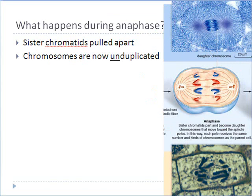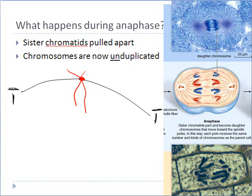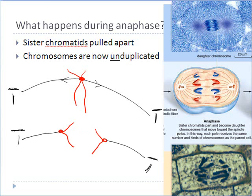During anaphase, now that we've lined everybody up along the equator, we can divide up the content in two. Each duplicated chromosome is attached to one centriole on one side and another centriole on the other side of the cell. Each centriole begins pulling on its spindle fibers, literally pulling apart the duplicated chromosome — pulling the sister chromatids apart — and those sister chromatids start moving toward their respective poles. Think: A in anaphase means apart.